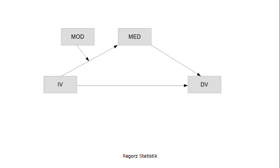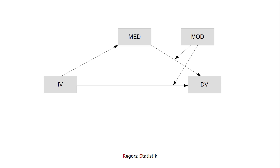The first model we'll be looking at is process model number 7. That is a moderated mediation where the A path is moderated. The second example is process model number 15. That is a moderated mediation where the B path and the C' path are moderated.